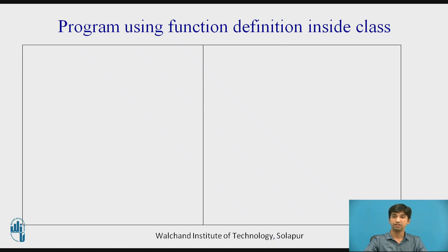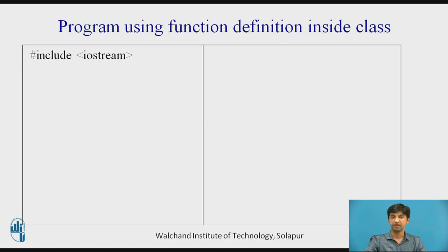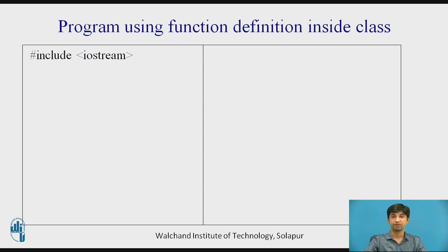In C++, whenever you write a program, it includes #include iostream.h — the input output stream header file. It has two functions: cout and cin. Cout works for printing — if you want to display something on the screen, you use cout. If you want to get input from the user, you use cin.